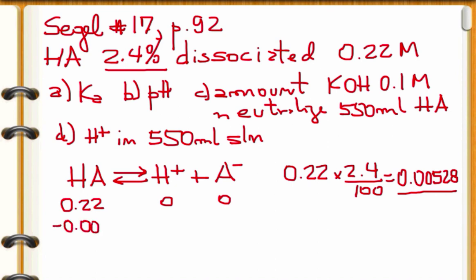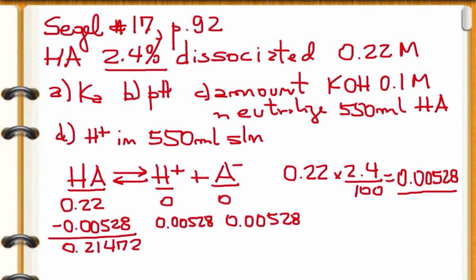So subtracting here 0.00528, and for each HA that dissociated is going to give 1 H plus and 1 A minus, right? So 0.00528 and 0.00528. Subtracting here 0.00528 from 0.22 gives 0.21472.